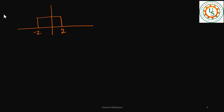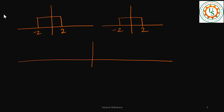Now let's look at a variation. The next example: both sequences are rectangular pulses from −2 to 2. What's the answer? Using the shortcut: left indices −2 + (−2) = −4, right indices 2 + 2 = 4. So the output signal lies within [−4, 4]. Take one sequence and reverse it.